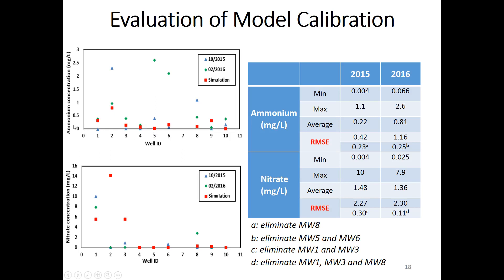These are ammonia and nitrate concentrations at the 10 wells. The simulation results are not all good — some are within range, but some are outside. For ammonia, some simulated values are outside the range; for nitrate, some simulated values are higher than measured.